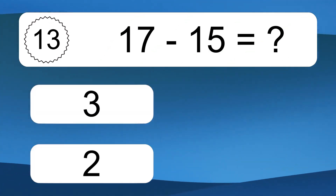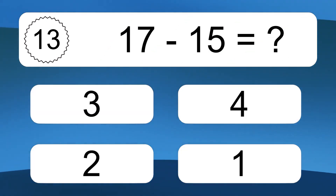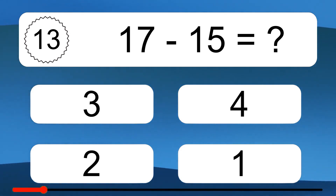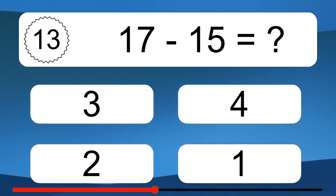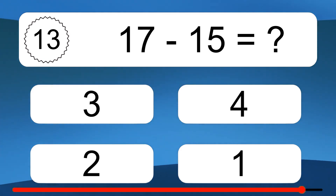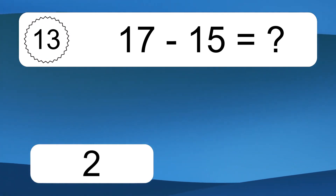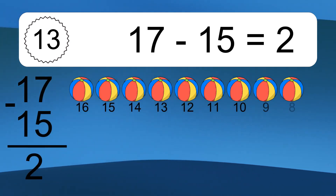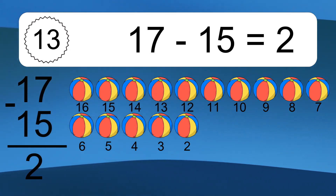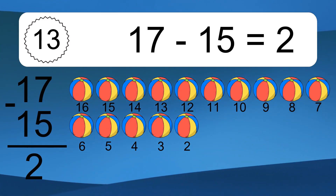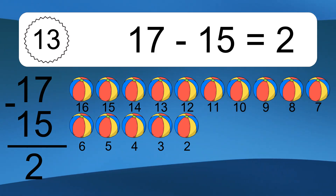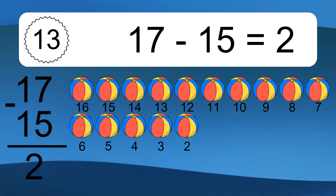17 minus 15 equals what? 17 minus 15 equals 2. Let's count it: 16, 15, 14, 13, 12, 11, 10, 9, 8, 7, 6, 5, 4, 3, 2.